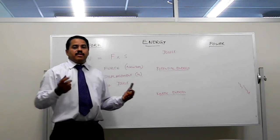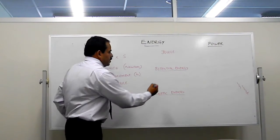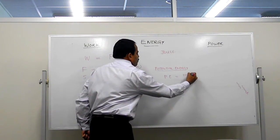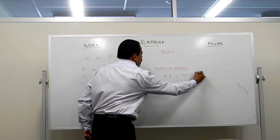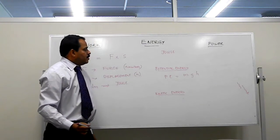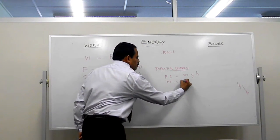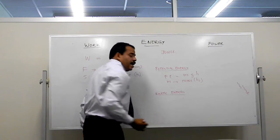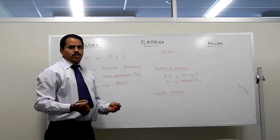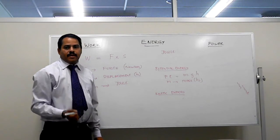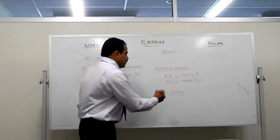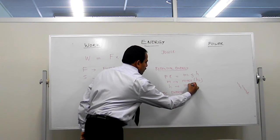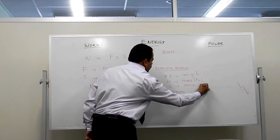We can write the expression for potential energy as PE equals m times g times h, where m is mass in kilogram, g is the acceleration due to gravity, and h is the height of the object from the datum in meter.